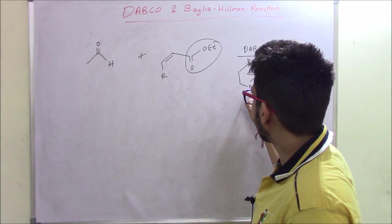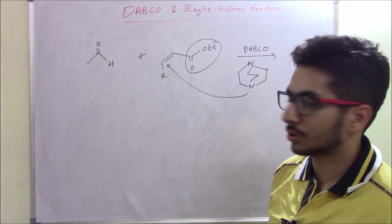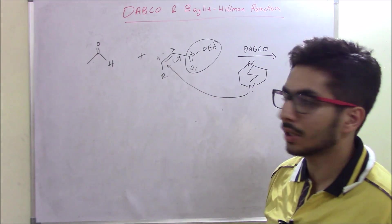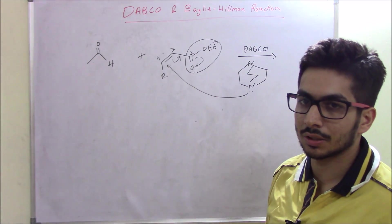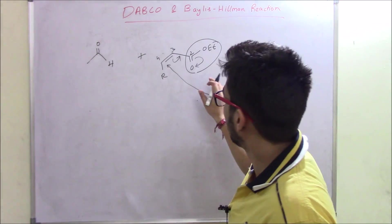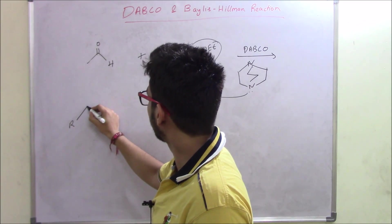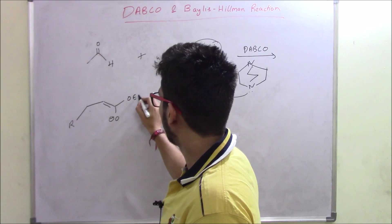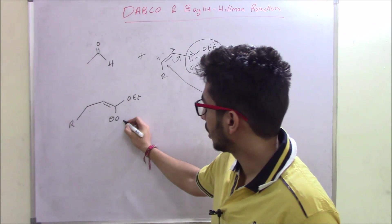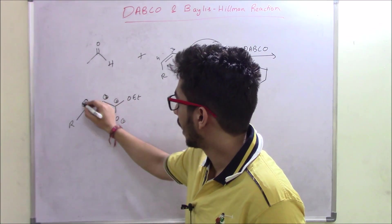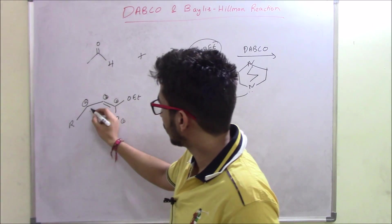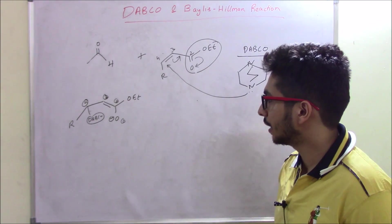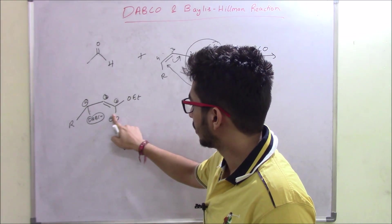When DABCO attacks at the fourth position, the double bond migrates, and the double bond on oxygen also migrates — this bond gets broken and we get a negative charge on oxygen. So we generate a species with the R group, a double bond, O minus, and OEt. To the fourth carbon we have DABCO attached. If you're having confusion, label the carbons 1, 2, 3, 4 to track where the attack takes place.